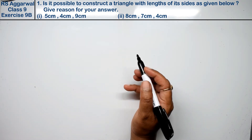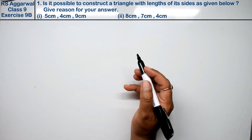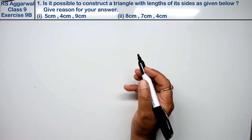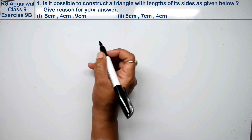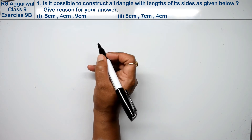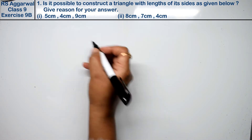Let's do question number 1 of Exercise 9B, that is Congruence of Triangles and Inequalities in a Triangle. The question asks: is it possible to construct a triangle with the lengths of sides given below? Give reasons for your answer. We need to determine whether a triangle can be formed from the given sides.